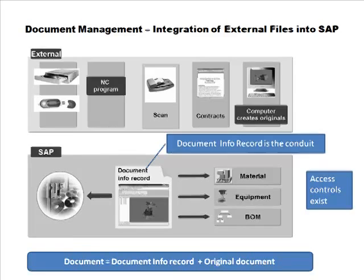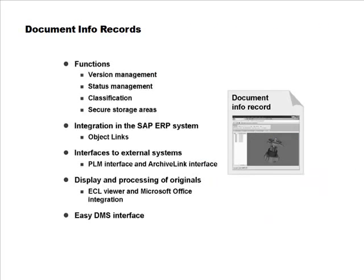Document info records support version management, status management, classification, and secure storage areas. Within SAP, when you connect a document info record to an SAP object, that is called an object link. The document info record also has a PLM interface — a product lifecycle management interface — through which you can connect to design systems, where the document can be a file in the design system.